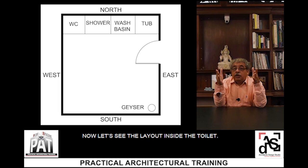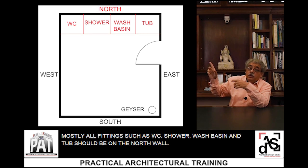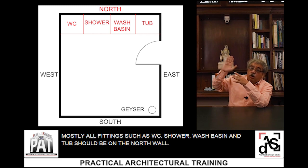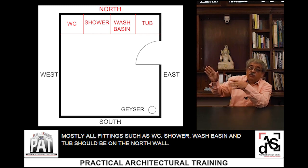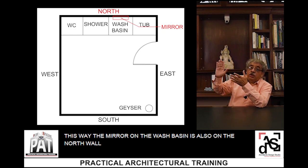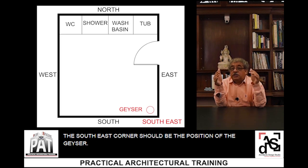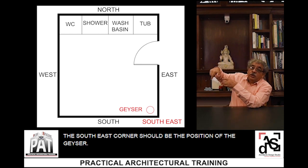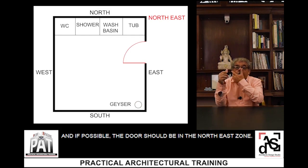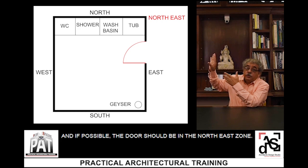Now let's see the layout inside the toilet. Most of the fittings — such as WC, shower, washbasin, and the tub — should be on the north wall of the toilet, so the mirror on the washbasin is also on the north wall. The south-east corner should be the position of the geyser. And if possible, the door should be in the north-east zone.